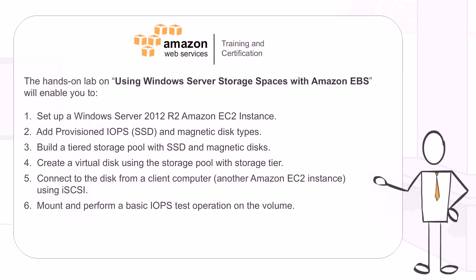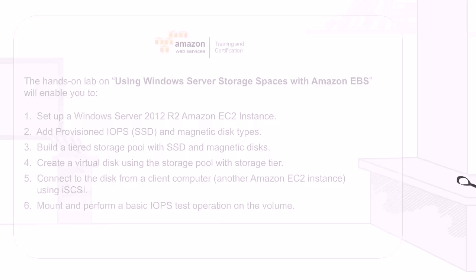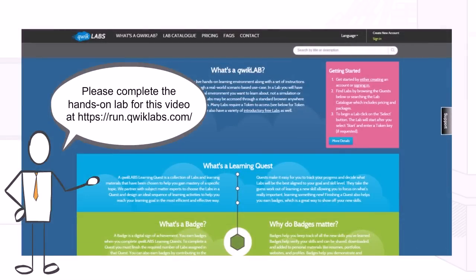You will also connect to the disk from a client computer — another Amazon EC2 instance — using iSCSI, then mount and perform a basic IOPS test operation on the volume. Please complete the hands-on lab for this video at https://run.quicklabs.com.